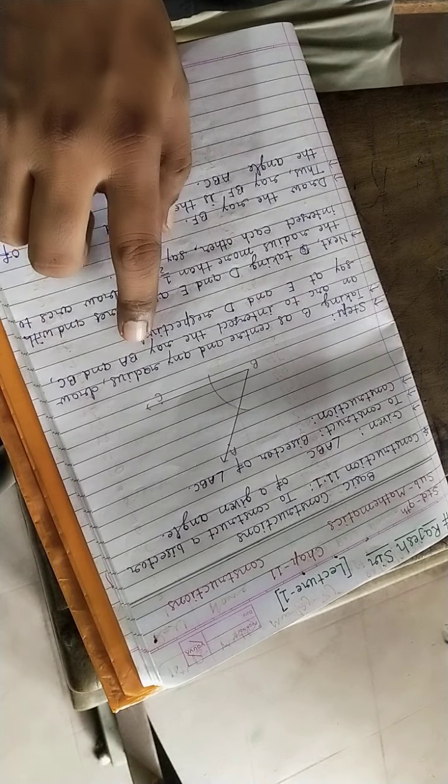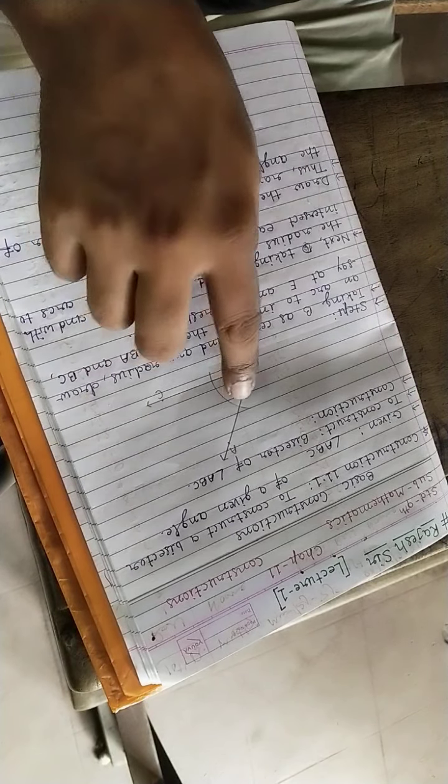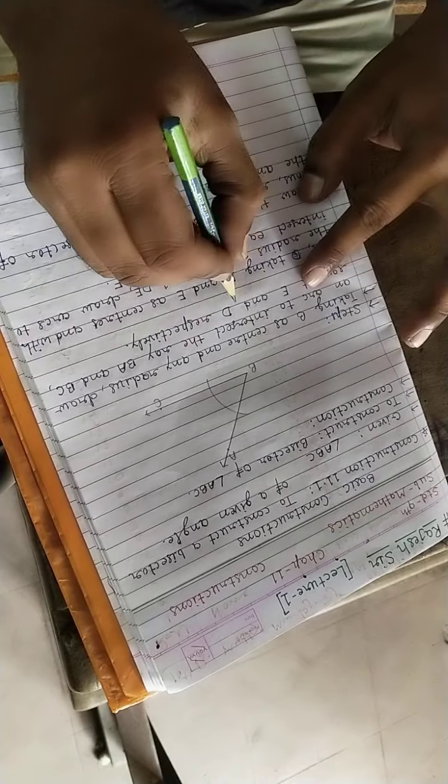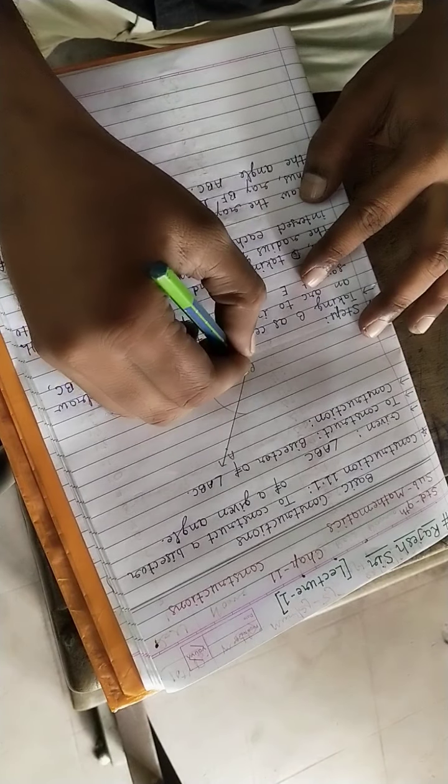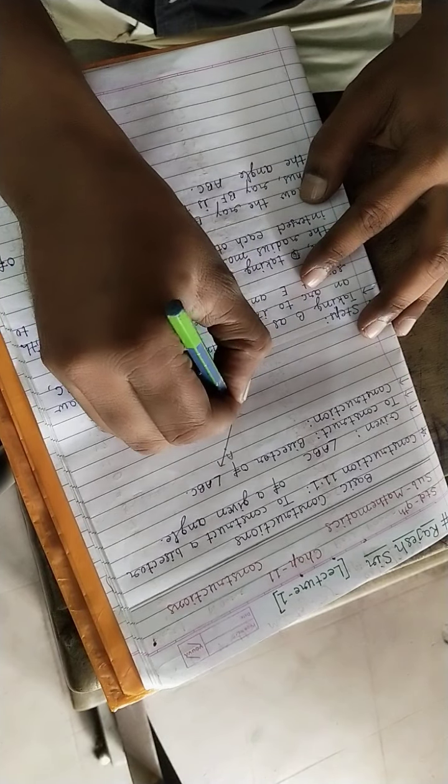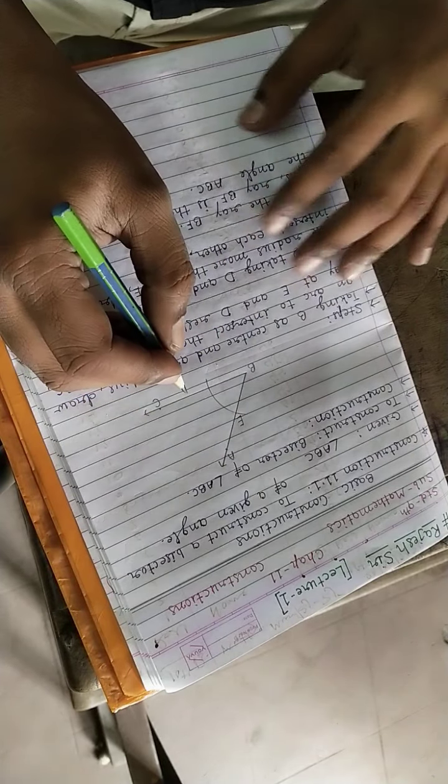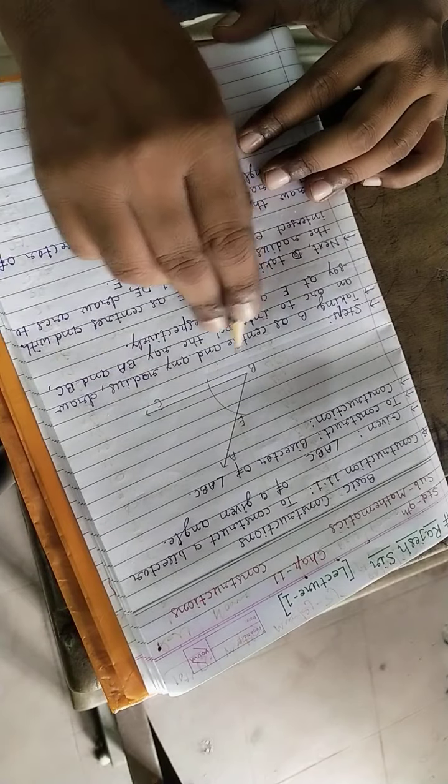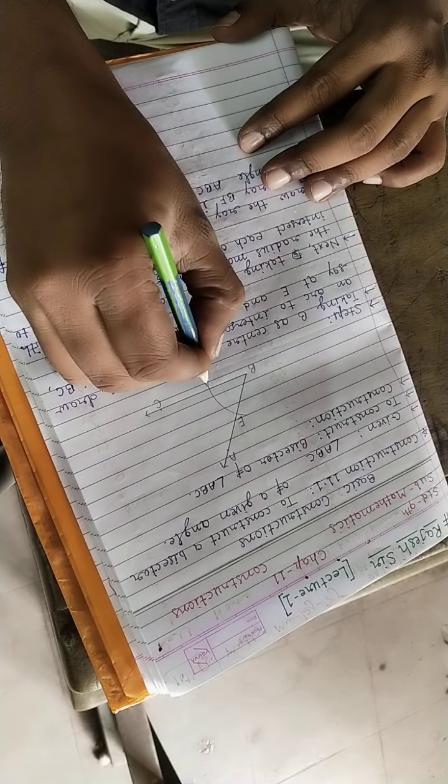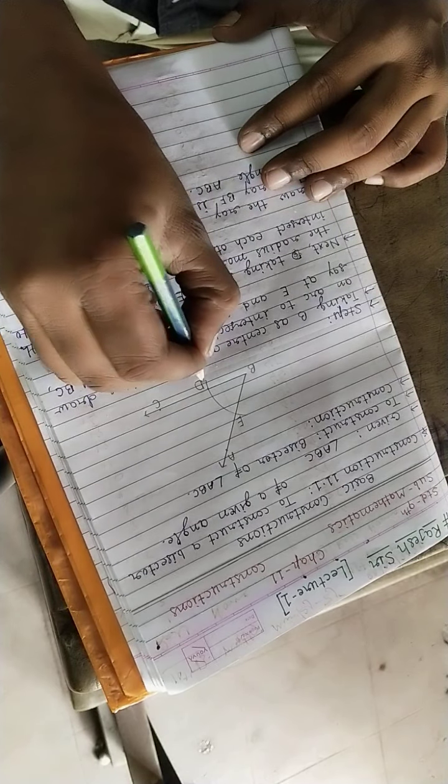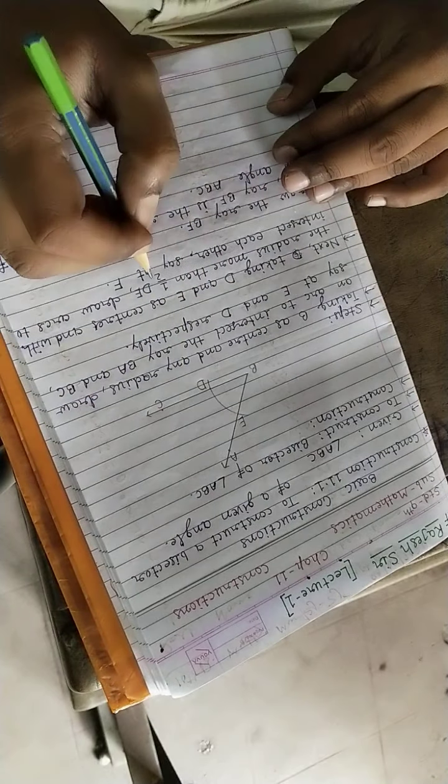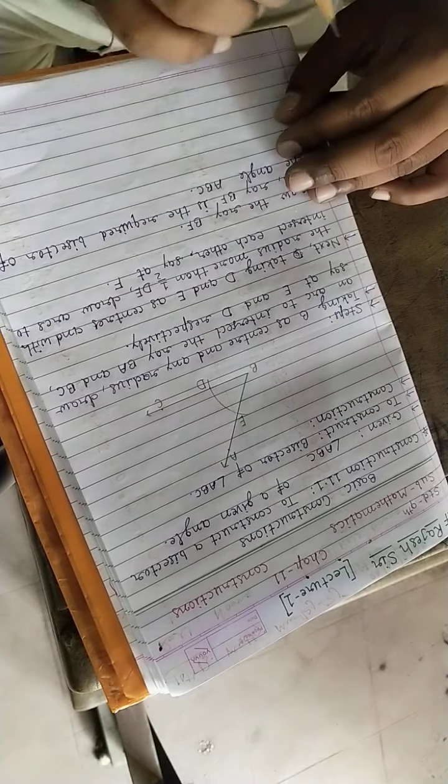Say that BA and BC where it is intersecting - at E and D. Wherever on BA it intersects, say there is point E. And where it intersects BC, say there is point D. This way we have points D and E.